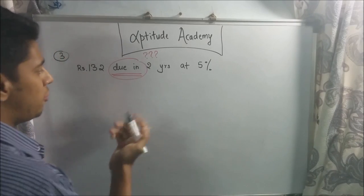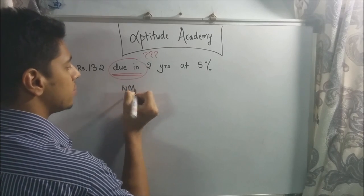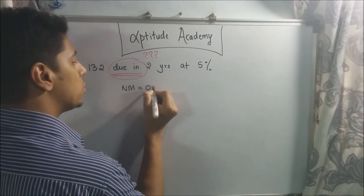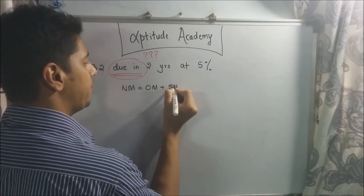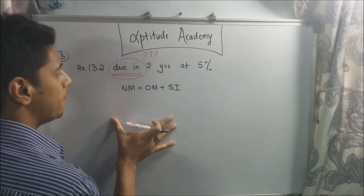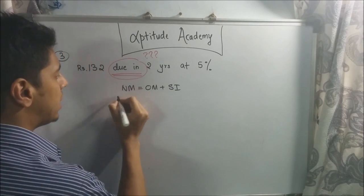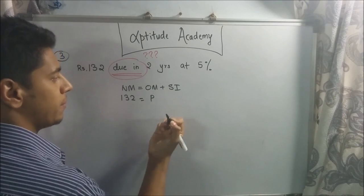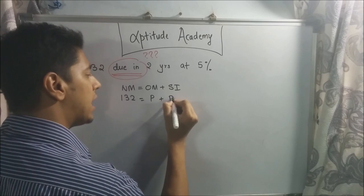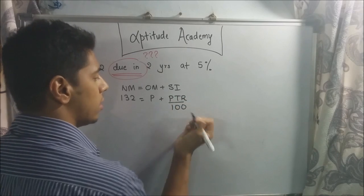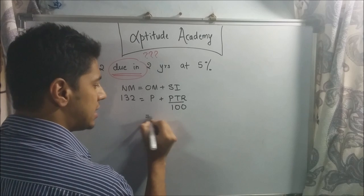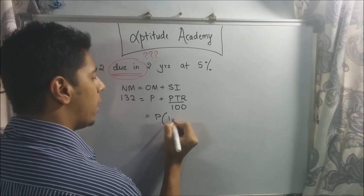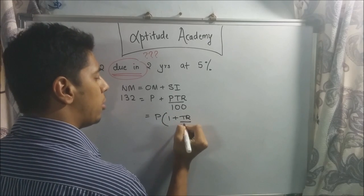So now, we can write down the formula. We know new money, that is 132, equals old money plus SI. What have they told us? We know new money is 132. What is the old money principle? What is SI? PTR upon 100. Now, P and P is common. So we'll just take P times 1 plus TR upon 100. Now, P is common. What is T? T we know is 2 years. So 1 plus 2 into rate, which is 5, divided by 100. So it's equal to P into 1 plus 10 by 100.